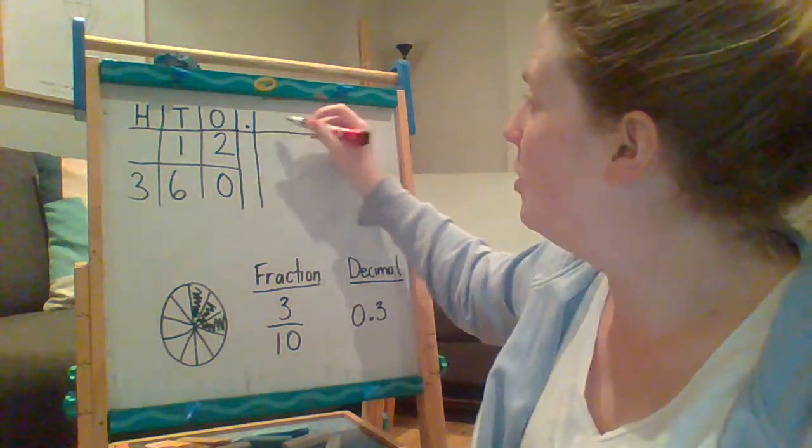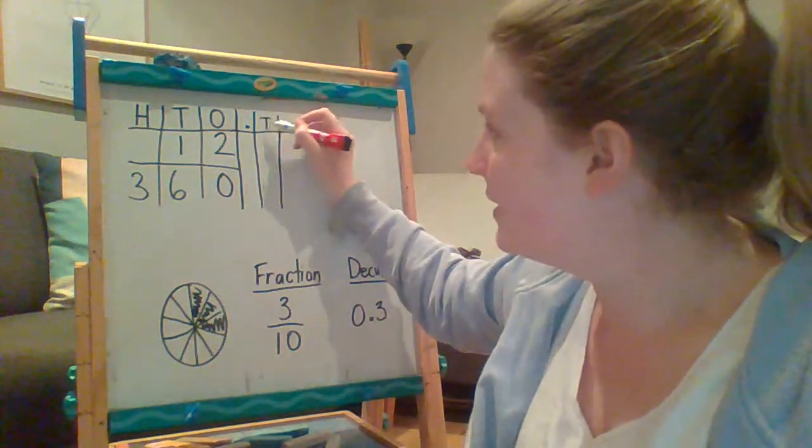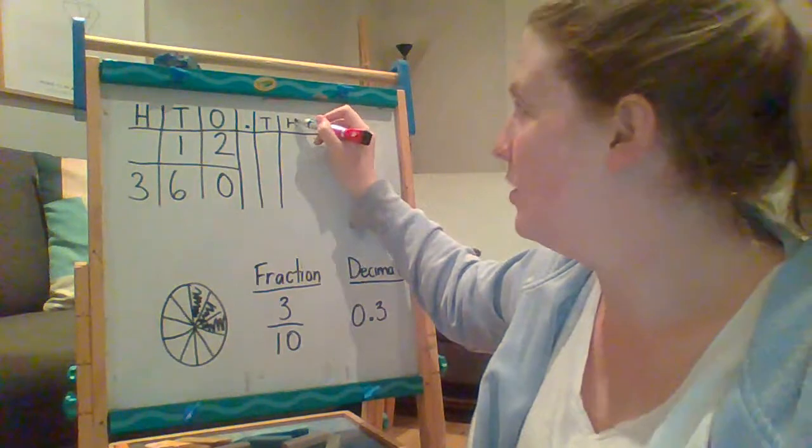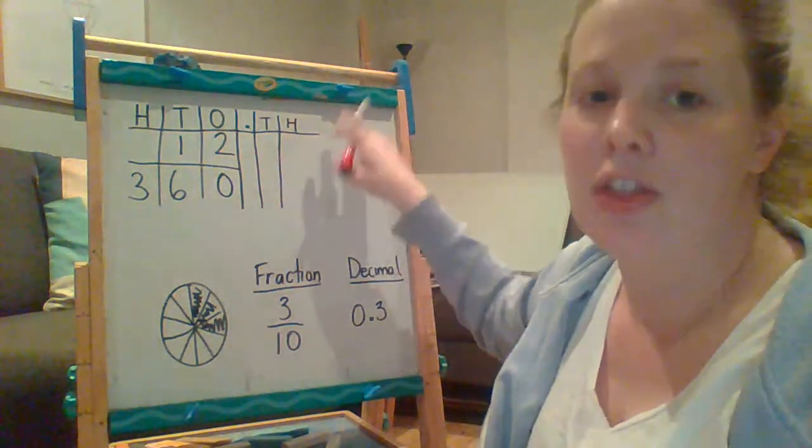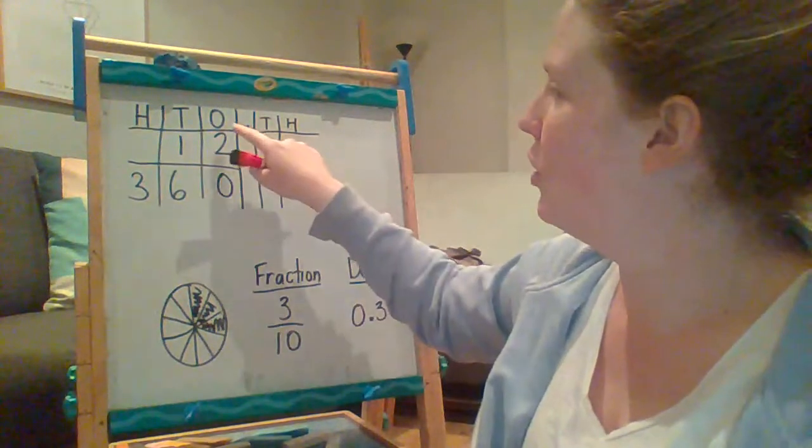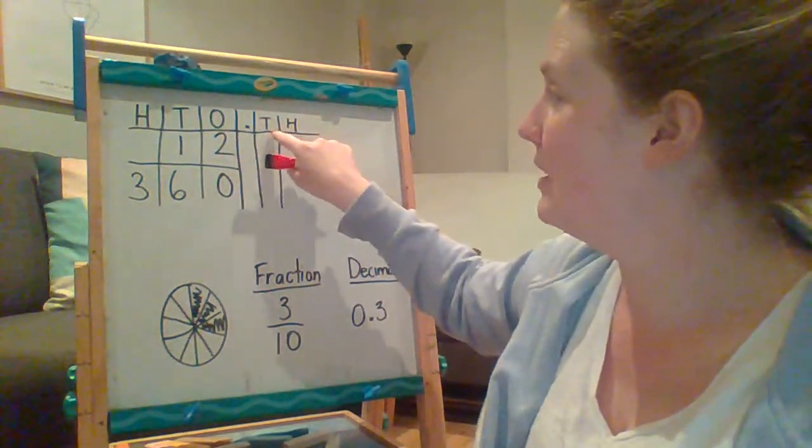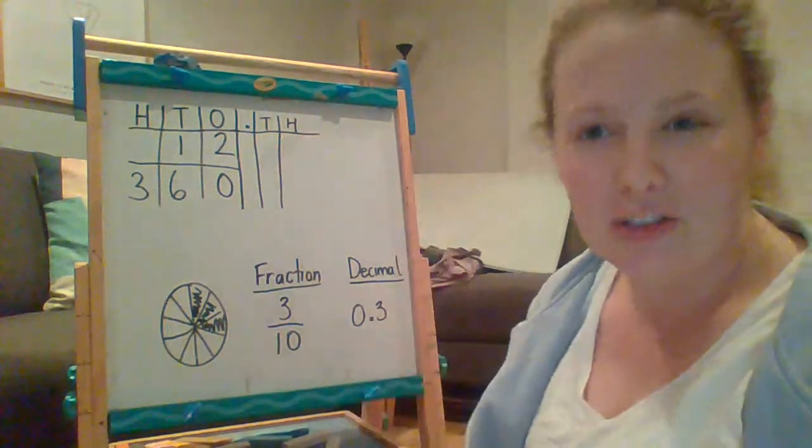And then we kind of go backwards. So we go tenths, then we go hundredths, and then we go thousandths, et cetera. So we're going backwards that way. So see how we go ones, tens, hundreds, and then going back this way, we've got tenths and hundredths. So it's a little bit of a pattern.